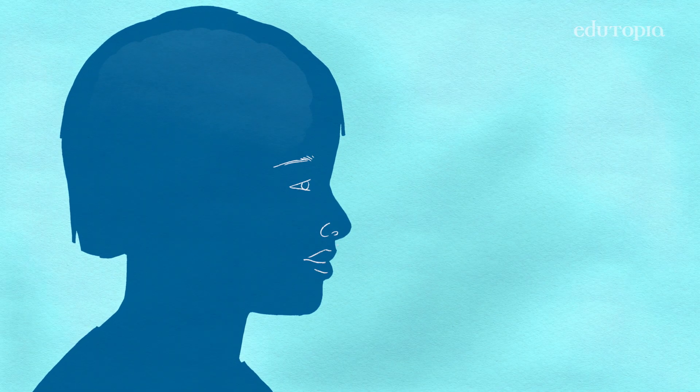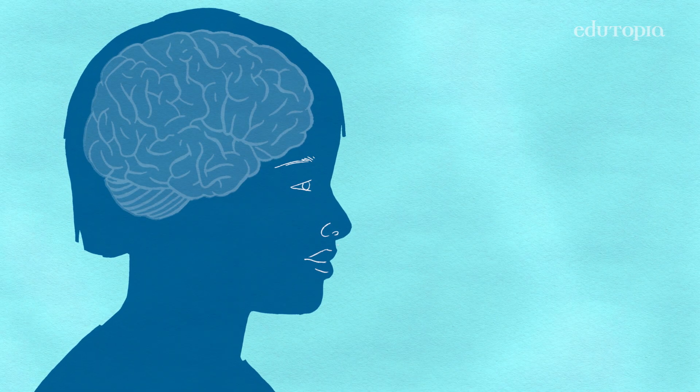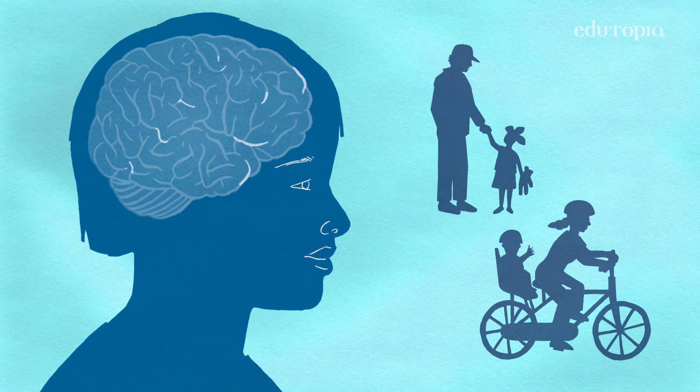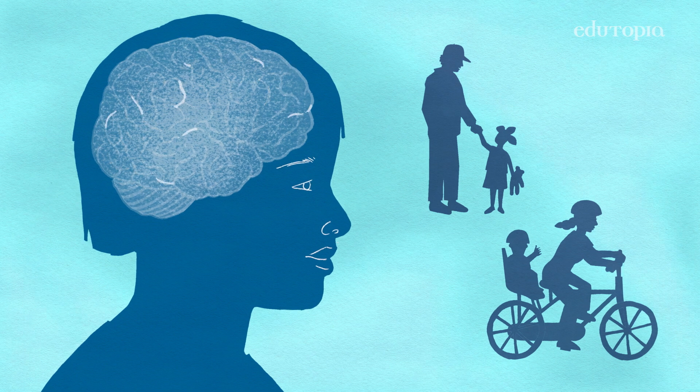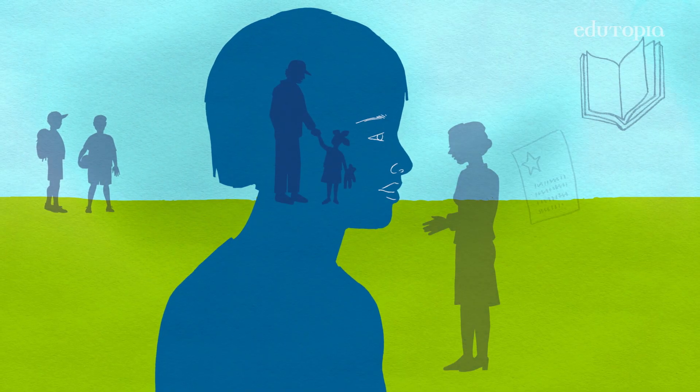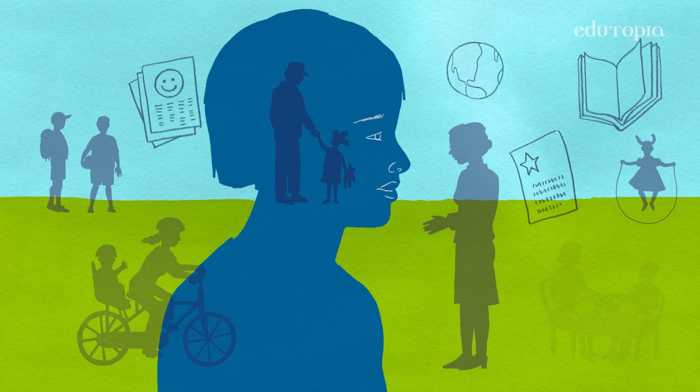There are a few core principles that define all of human development. The first is malleability — the unique property of the brain to change in response to relationships and experiences. Neural tissue is the most susceptible to change of any tissue in the human body. When children are born, their brains are not fully developed. The development of the brain actually continues into young adulthood. It is relationships and experiences that drive the development of the brain.